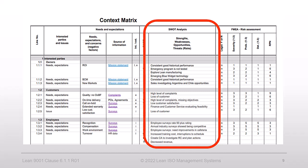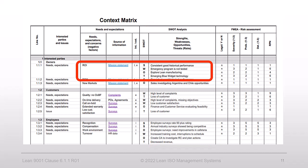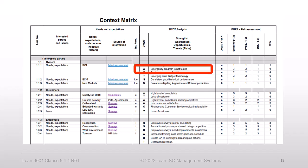Let's take a look at an example of such risk analysis for one of our interested parties — the owners. One of the owners' needs is the return on investment, or ROI. Our SWOT analysis showed that S, the strength, is the consistent good historical performance, so we shouldn't worry about this for now. Next is W, the weakness.